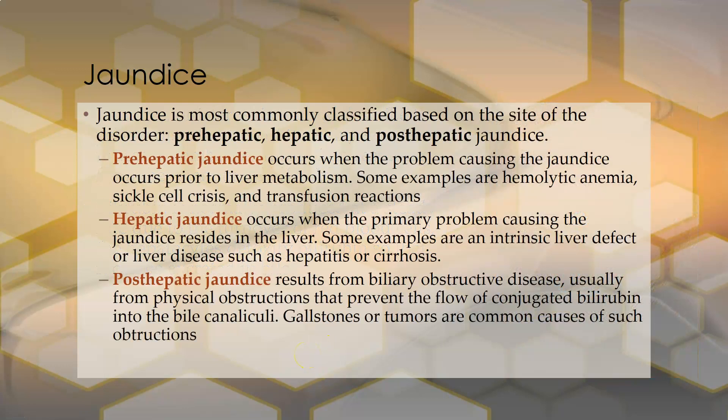Jaundice is most commonly classified based on the site of the disorder — where is the problem? It can be pre-hepatic, meaning before the liver; hepatic, at the liver; or post-hepatic, meaning after the liver as the bile is leaving. Pre-hepatic jaundice occurs when the problem causing the jaundice occurs prior to liver metabolism. Examples include hemolytic anemia, sickle cell crisis, and transfusion reactions — basically anything leading to increased red cell destruction and therefore increased bilirubin arriving at the liver.